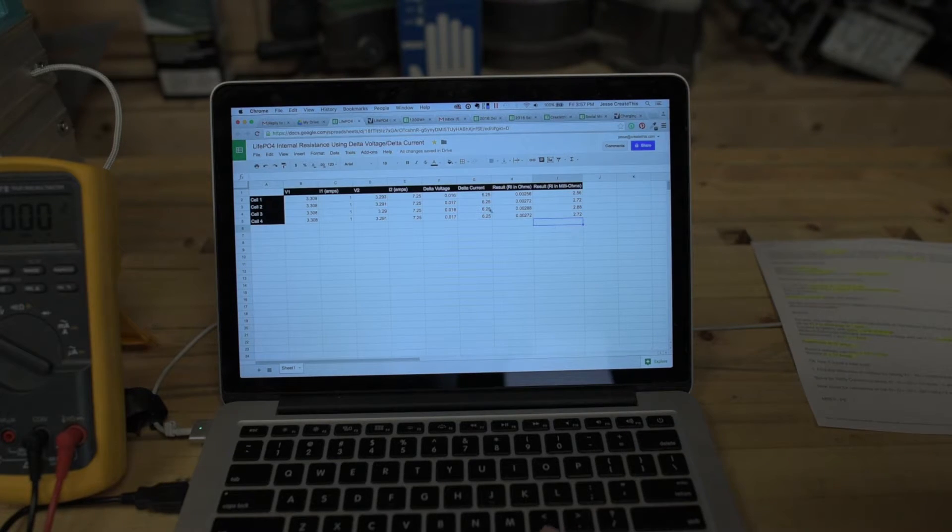I've been told that this would be much more accurate if we had a larger delta between the two currents. So current 1 was 1 amp, and current 2 was 7.25 amps. If, for example, we did current 1, 10 amps, and current 2, 100 amps, then this would be a much more accurate reading. But I think this is probably fine for my purposes.